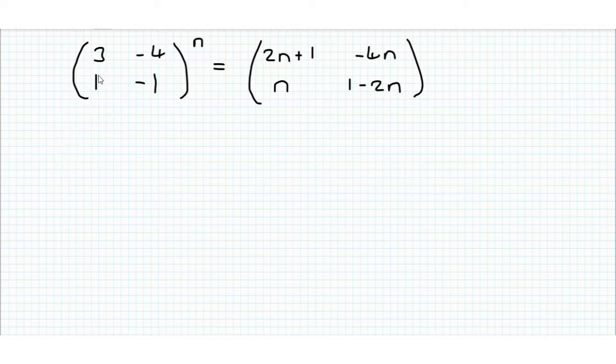So we've got to prove for all n in the natural numbers that this result is true: the matrix (3, -4; 1, -1) to the power of n is equal to (2n+1, -4n; n, 1-2n). The natural numbers are the integers that are greater than or equal to 1, the counting numbers.